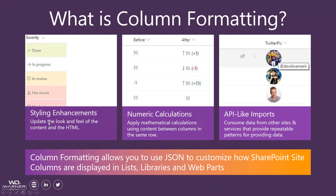In the first example, we've got some styling enhancements. We were able to update the look and feel of the content in HTML. Based on the content values of a single column, we were able to change the actual styling, put an icon next to the content, put a background color — and all of that is dynamic based on the content in that singular column.